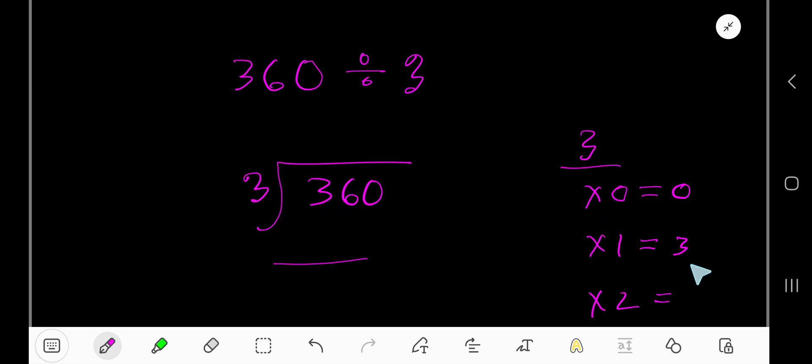3 goes into 3 how many times? 1 time, right? 1. 1 times 3. That gives you 3. If you subtract, you are getting 0.